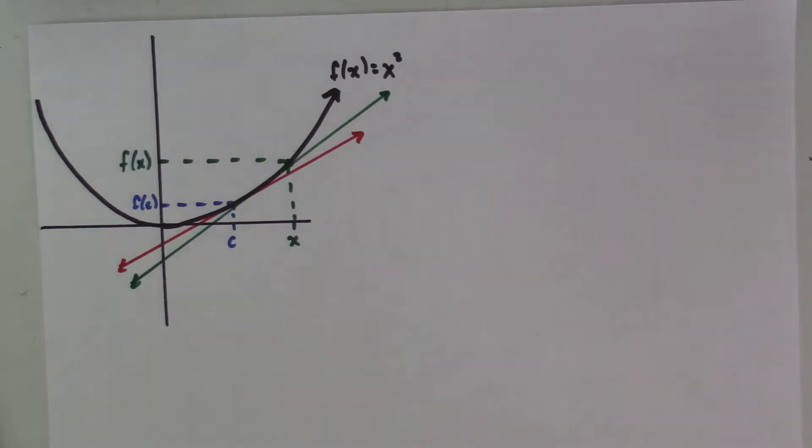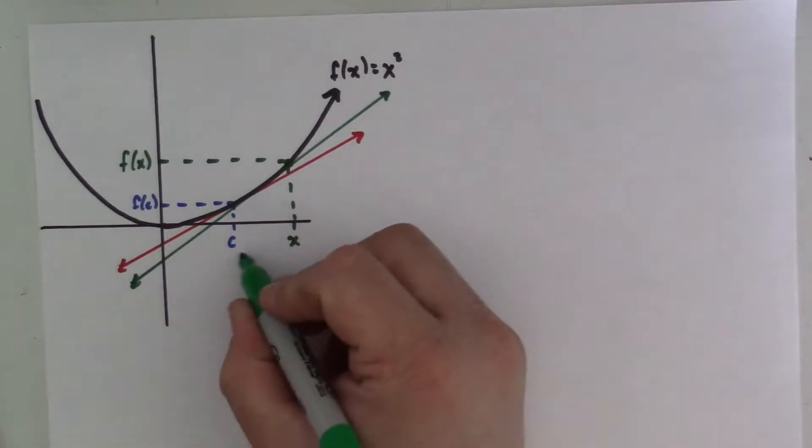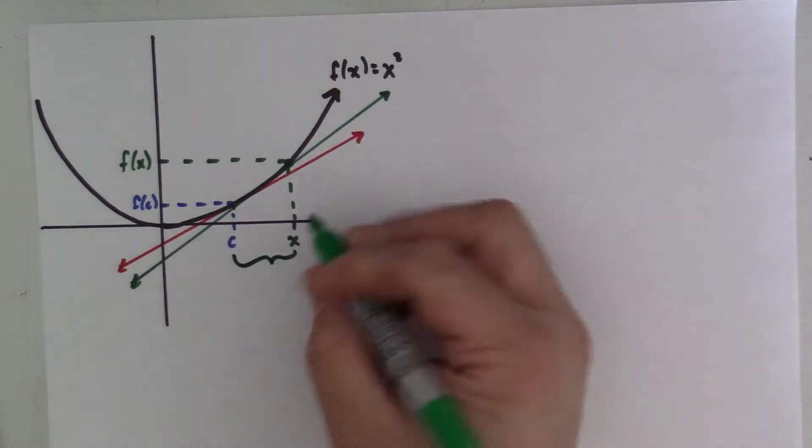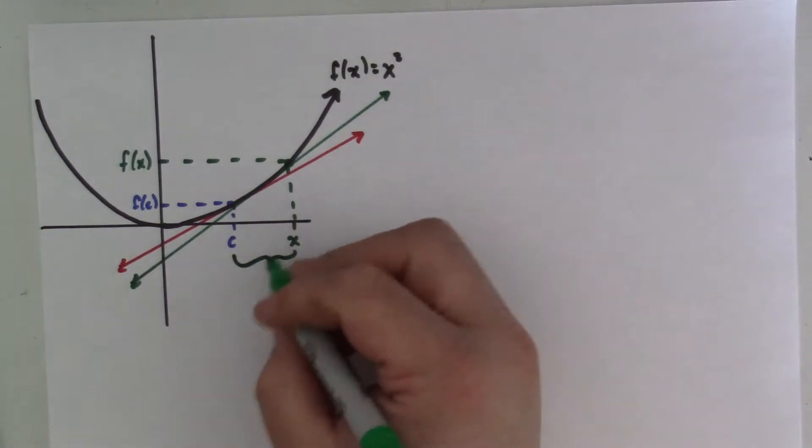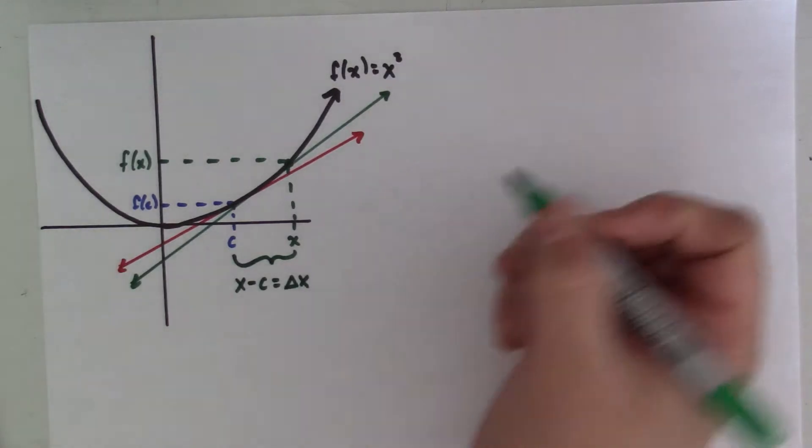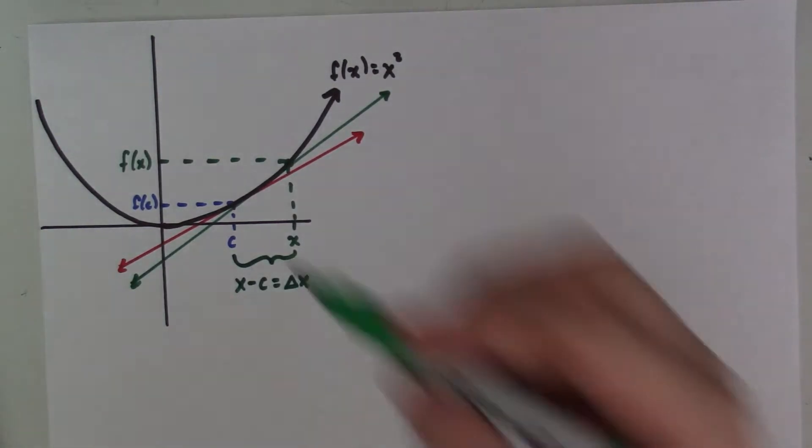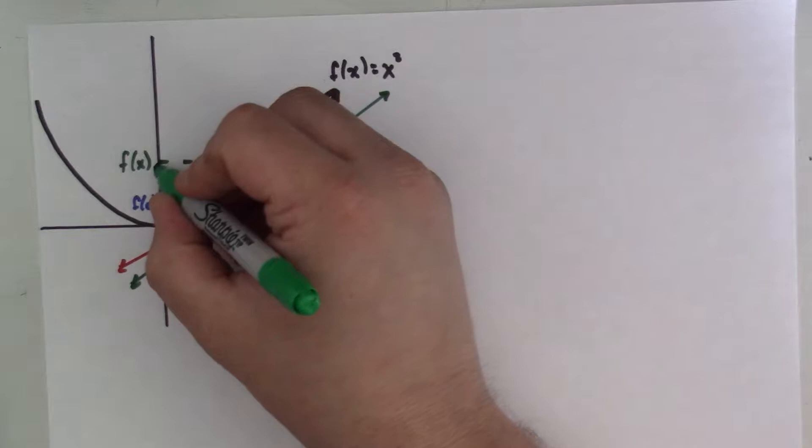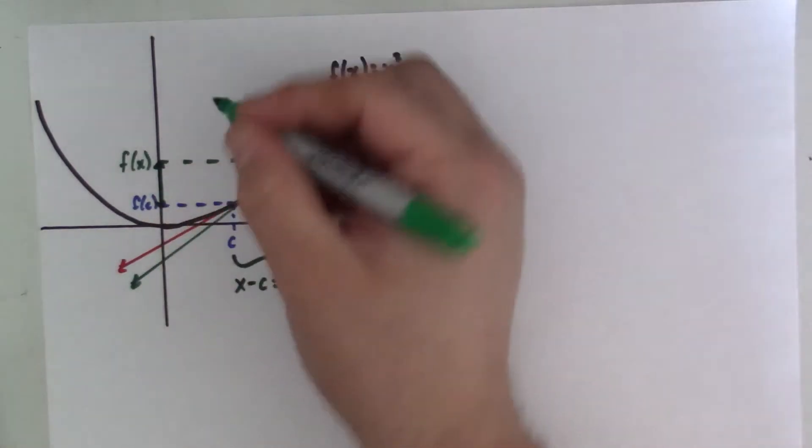So just a couple things I want to note before we get started. We're going to define the distance between x and c, so we'll just say x minus c, and we're going to call that delta x. And we're going to talk about the distance between the y coordinates, f of x and f of c. So delta y is f of x minus f of c.